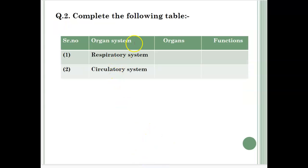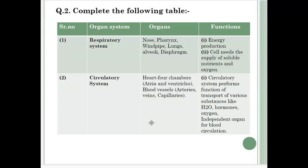Now this is again complete the following table. Organ system: respiratory system and circulatory system, and we have to write down the organs and functions. So for respiratory system, organs are nose, pharynx, windpipe, lungs, alveoli and diaphragm. Functions of the respiratory system are energy production; cells need the supply of soluble nutrients and oxygen. Then second, circulatory system: organs are heart with four chambers, atria and ventricles.